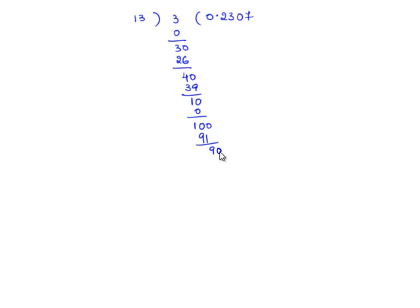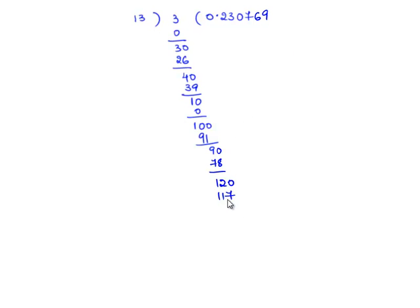13 goes in 100 seven times as 13 times 7 is 91, and we are left with remainder 9. Because of the decimal point, 9 becomes 90. 13 goes in 90 six times as 13 times 6 is 78, and we are left with remainder 12. Since 13 does not go in 12, because of the decimal point 12 becomes 120, and 13 goes in 120 nine times as 13 times 9 is 117, and we are left with remainder 3.